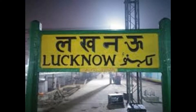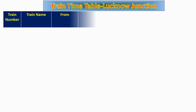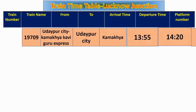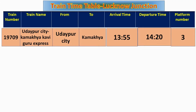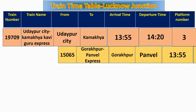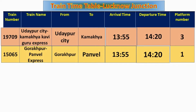Children, look at the timetable of some trains at Lucknow Junction. Train number 19709, Udaipur City Kamakhya Kaviguru Express, from Udaipur City to Kamakhya, will arrive at 13:55 at platform number 3. Its departure time is 14:20. Train number 15065, Gorakhpur Panwal Express, from Gorakhpur to Panwal, will arrive at 13:55.